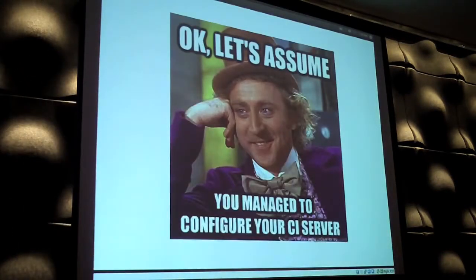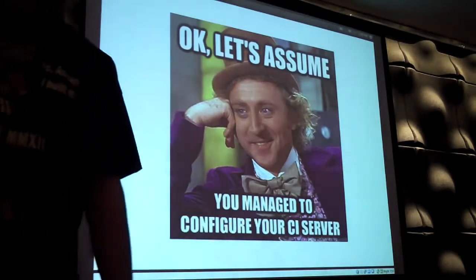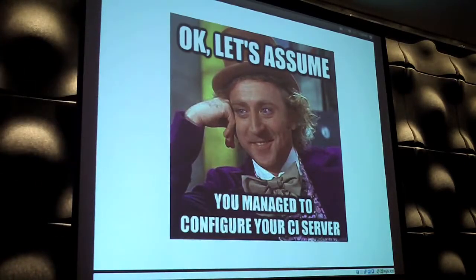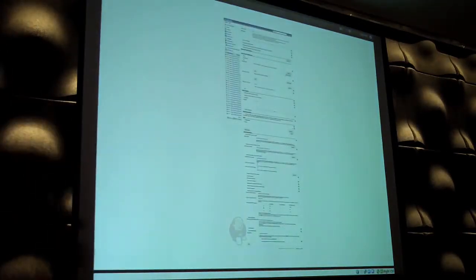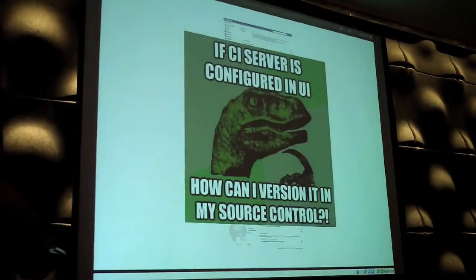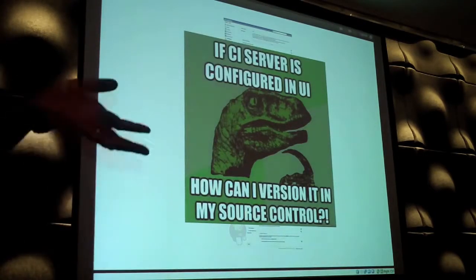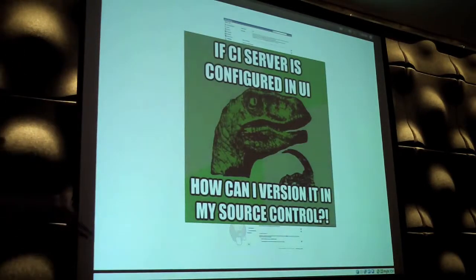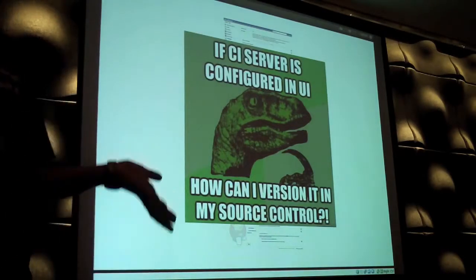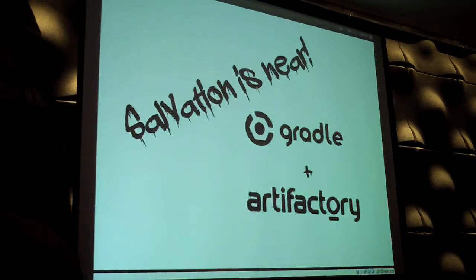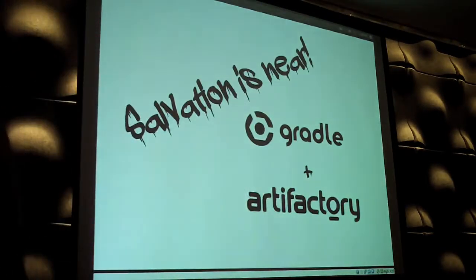So let's say you manage to configure your CI server for a feature branch. I have a CI server configuration that works perfectly for my master branch, and now I want to do the same for my feature branch. I start from scratch in Jenkins — there are a lot of fields, a long configuration process. The main issue is: if you do your configuration inside the UI or the dot XML, how do you keep track of the configuration and add dynamicity to the CI server environment? This is what we try to solve with the aggregation of Jenkins, Gradle, and Artifactory.